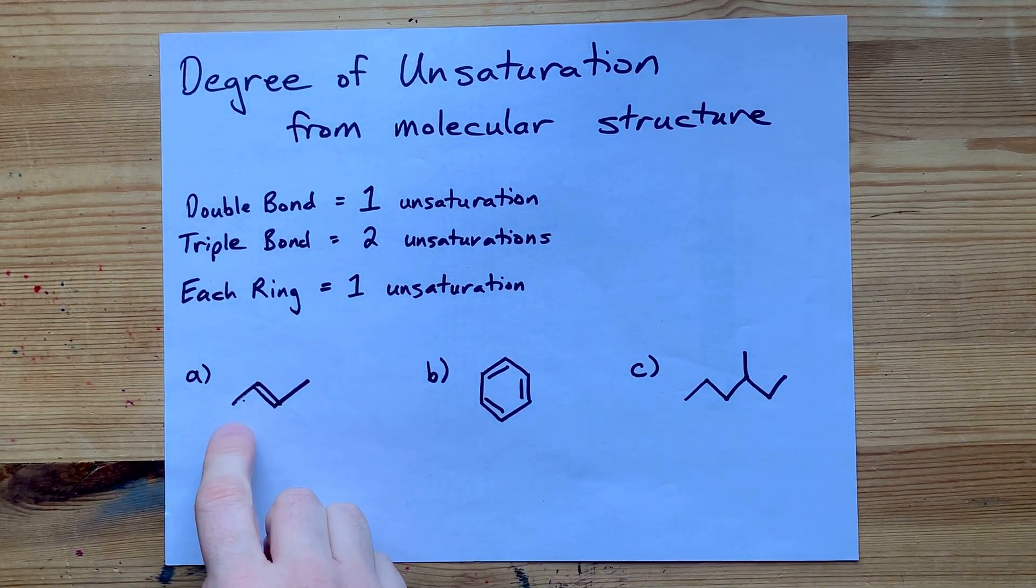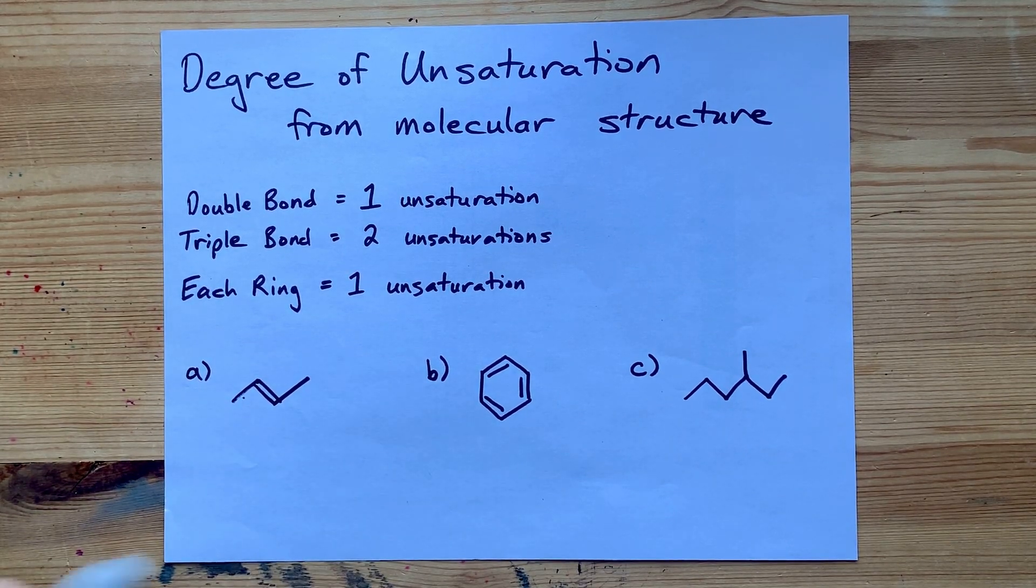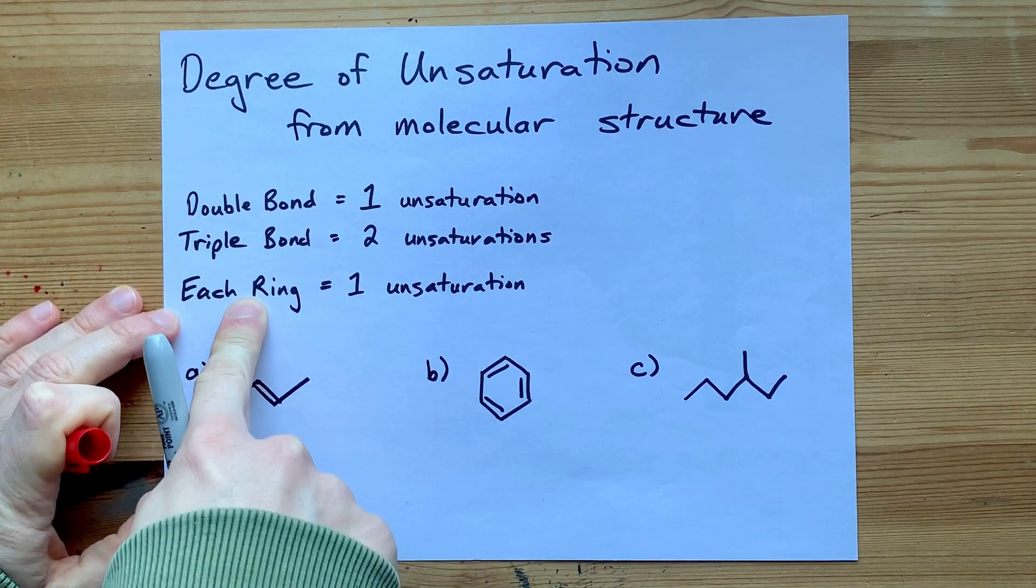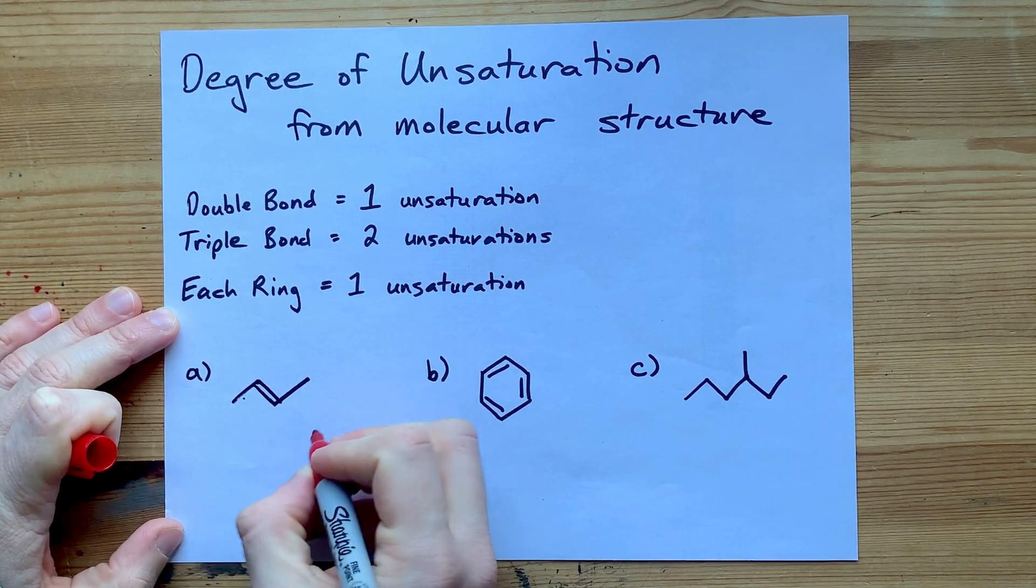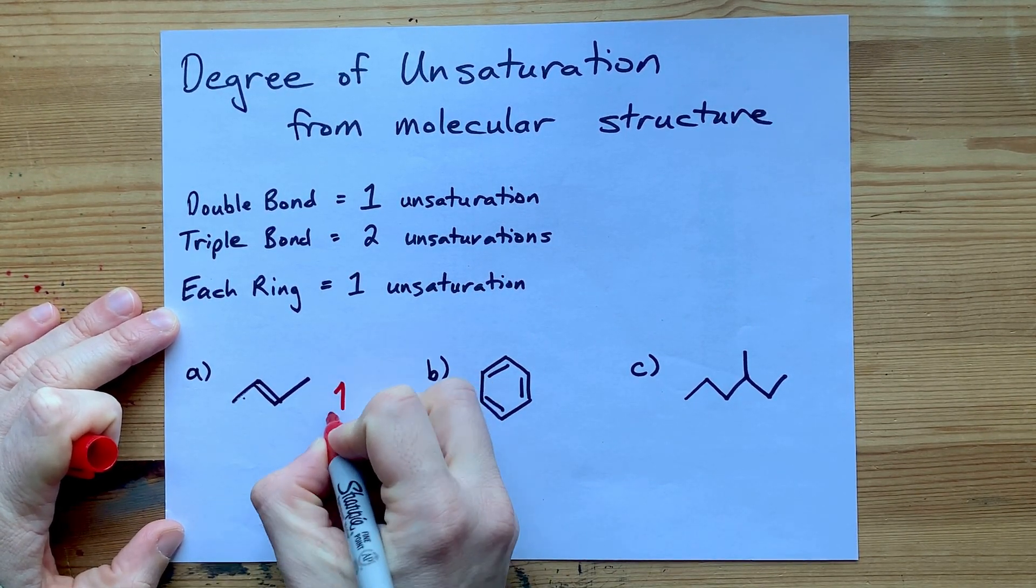So here we have a straight chain molecule. The only thing we have that fits any of these descriptions here is one double bond. I anticipate the degree of unsaturation here to be one.